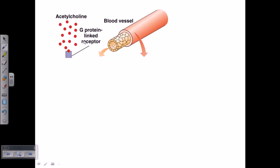It actually does it using a neurotransmitter called acetylcholine, a very important and noteworthy neurotransmitter in our body. Acetylcholine will go and bind with the G protein-linked receptor that is present on the surface of endothelial cells. So this is an endothelial cell, and on the top of the endothelial cell, we have the G protein-linked or G protein-coupled receptor.